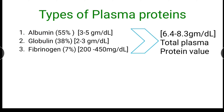Mainly there are three types of plasma proteins: albumin, globulin, and fibrinogen. Concentration of total proteins is 6.4 to 8.3 gram per deciliter. Albumin concentration is 3 to 5 gram per deciliter, globulin 2 to 3 gram per deciliter, and fibrinogen 200 to 450 mg per deciliter, contributing 55%, 38%, and 7% among total proteins respectively.